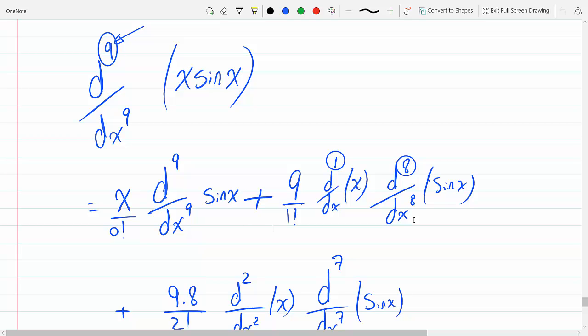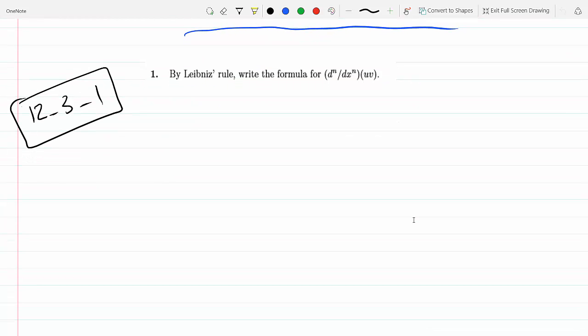One derivative goes up, the other derivative goes down, and so here the sum of the derivatives will be n. So if I start on this, this is the nth derivative with respect to x of uv.